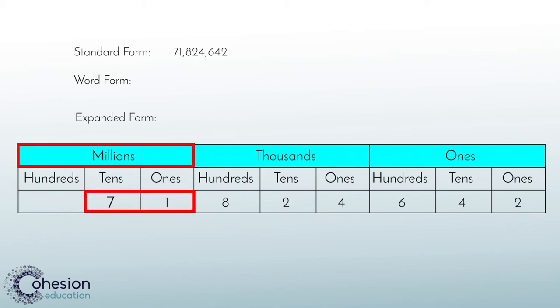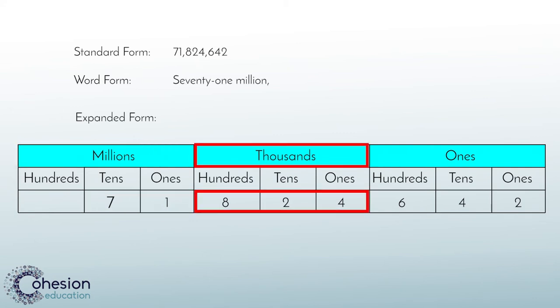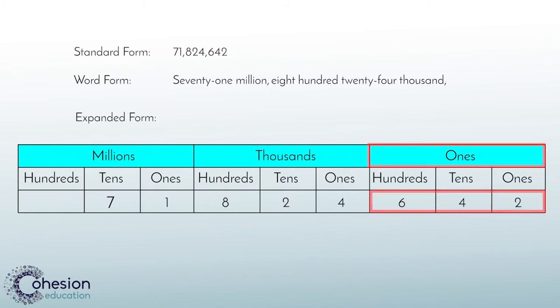If you look at the millions period, the number is 71, so we write 71 million. Looking at the next period, we have 824 in the thousands, so we will write 824 thousands. And lastly, you will see we have 642 in the ones period. So we will just write this as 642 without naming the period behind it.